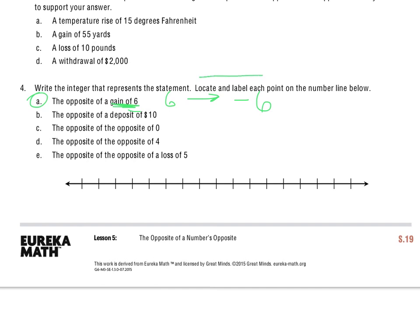Now it says that I have to locate and label each point on the number line below. When I take a look at my number line, I'll do this in black, just so any colors you'll be able to see. I'm going to start with 0, and just so I can fit everything in, I'm going to do a scale of 2.